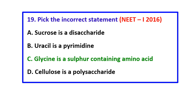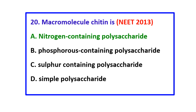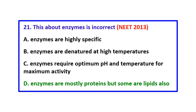Question 19: Pick the incorrect statement — the correct answer is: glycine is a sulfur-containing amino acid. This is the incorrect statement. The other statements are correct: sucrose is a disaccharide, uracil is a pyrimidine, cellulose is a polysaccharide.